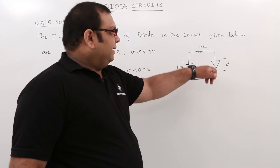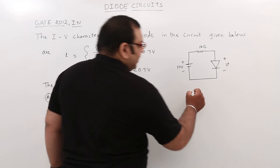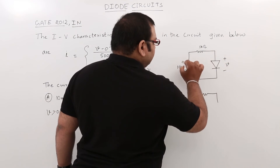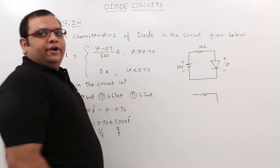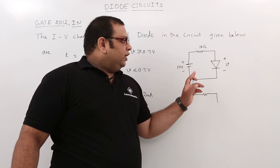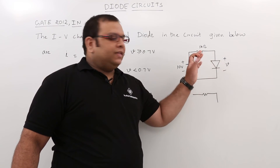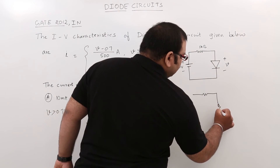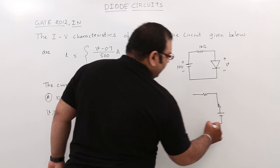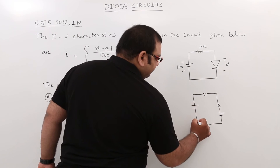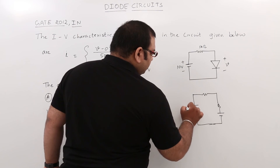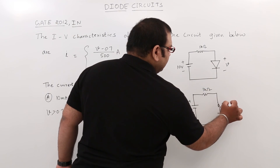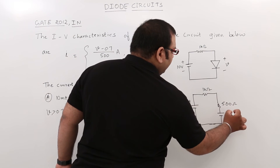Now let us replace the diode with its practical equivalent and redraw the circuit. The diode is forward biased because the positive terminal is connected to positive and negative to negative. The small signal equivalent consists of the forward biased resistance and the diode voltage. So the redrawn circuit has a 10-volt supply, a 1 kilo-ohm resistor, a 500-ohm forward resistance, and a 0.7-volt diode voltage source.